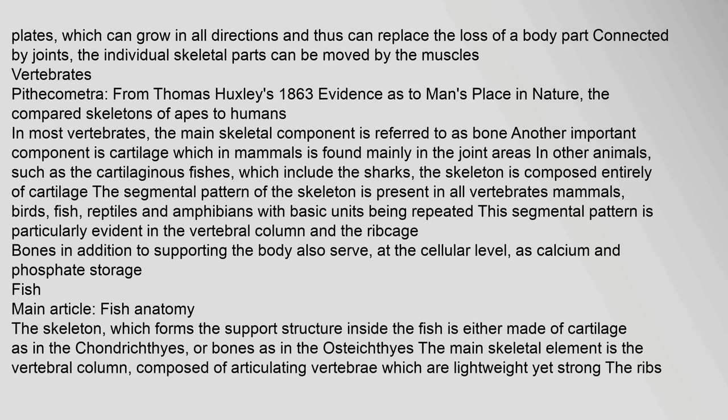In most vertebrates, the main skeletal component is referred to as bone. Another important component is cartilage, which in mammals is found mainly in the joint areas. In other animals, such as the cartilaginous fishes which include the sharks, the skeleton is composed entirely of cartilage. The segmental pattern of the skeleton is present in all vertebrates — mammals, birds, fish, reptiles and amphibians — with basic units being repeated. This segmental pattern is particularly evident in the vertebral column and the ribcage. Bones also serve, at the cellular level, as calcium and phosphate storage.